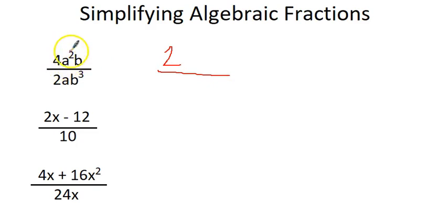And then with the a's, we've got a squared here, that's 2 a's, and we've only got 1a on the bottom. So we cancel that 1a with 1 of those a's. Cross that squared, and you're left with the a. So I'll write it over here as my answer.